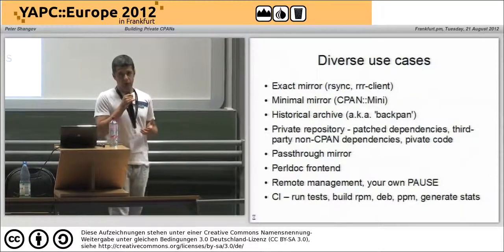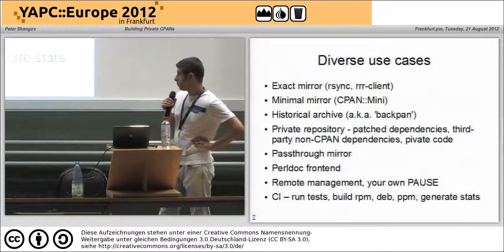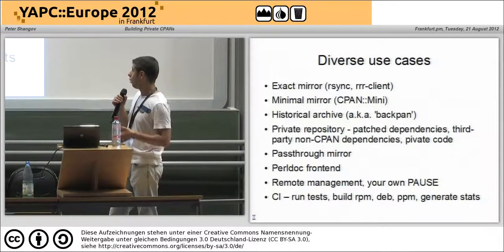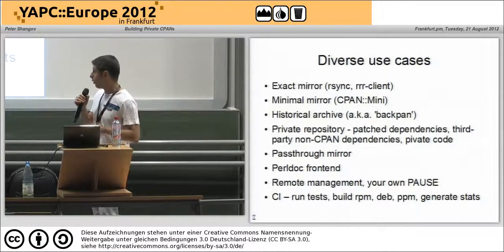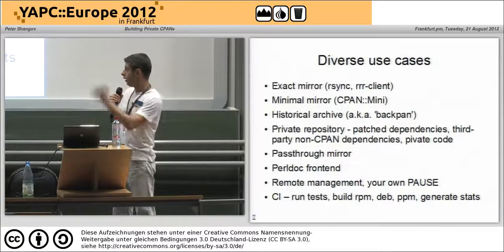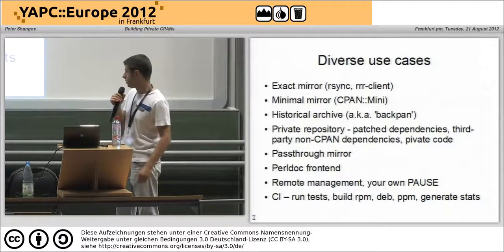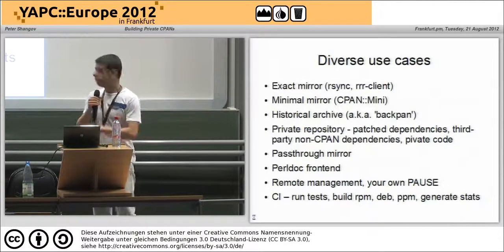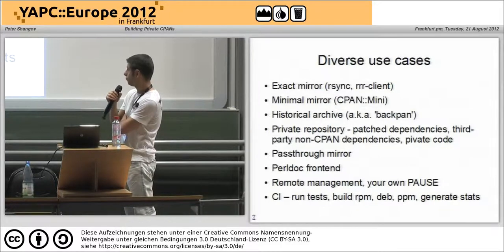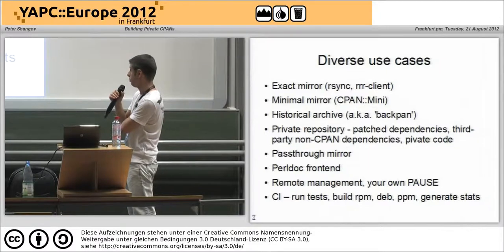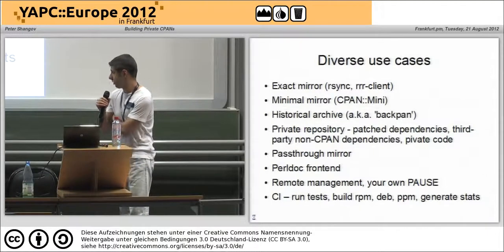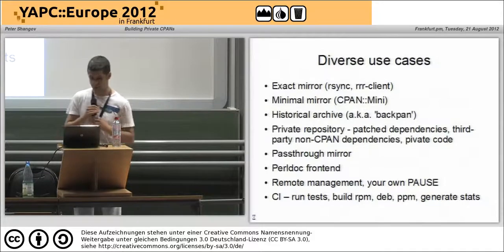But if you want to run your own private CPAN, the use cases can get fairly complicated. You may want to have just a CPAN mirror to speed up your local installs, or you want to mix that with your private code, or you might want to create just a pass-through mirror which contains only your distributions and then delegates to a public mirror for the additional dependencies. You may want to stick something like a PerlDoc frontend on top of it, add some remote management, your own POS server, or integrate it with a continuous integration server to run tests or trigger builds any time you add a distribution to your mirror.